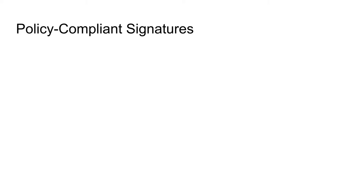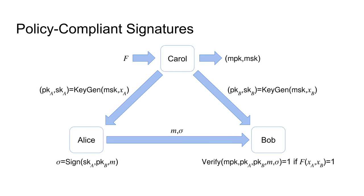Since none of the previous primitives fit our motivational example, we now introduce the new notion of policy-compliant signatures. In a policy-compliant signature scheme, Carol executes the setup procedure which takes as input a policy F and outputs a master public key and a master secret key. She then uses the master secret key together with an attribute set to generate a public key secret key pair — using attribute set XA for Alice and attribute set XB for Bob. To generate a signature, Alice uses her secret key together with a public key of Bob and a message M. The resulting message-signature pair can then be verified using the master public key and the public keys of Alice and Bob. A signature only verifies if the global policy F is fulfilled when evaluated using the attributes XA of Alice and XB of Bob.